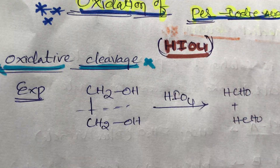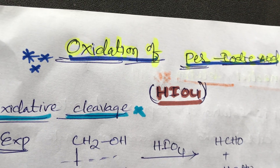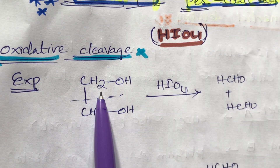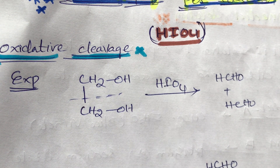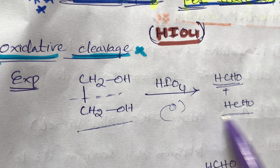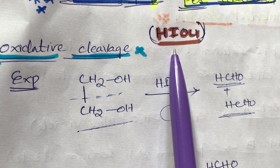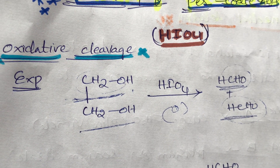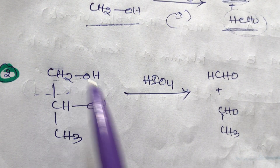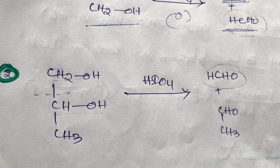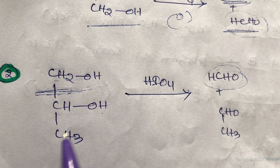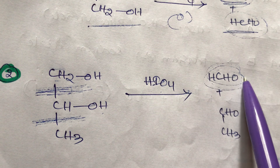The last topic is oxidation by periodic acid (HIO4). Periodic acid causes oxidative cleavage. For example, with a glycol, bond cleavage occurs: primary alcohols on oxidation give aldehydes in a one-step reaction. This is an oxidative bond cleavage.